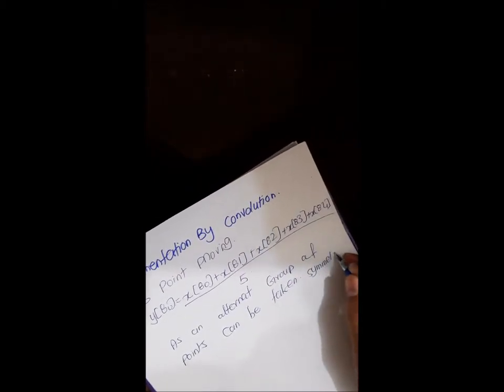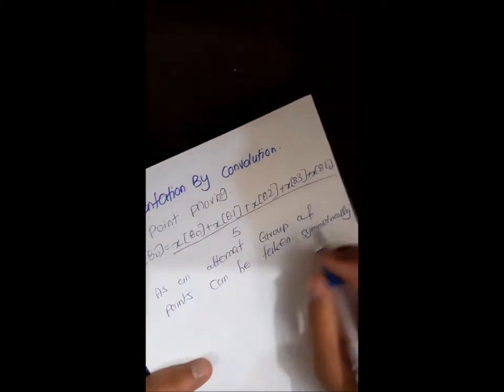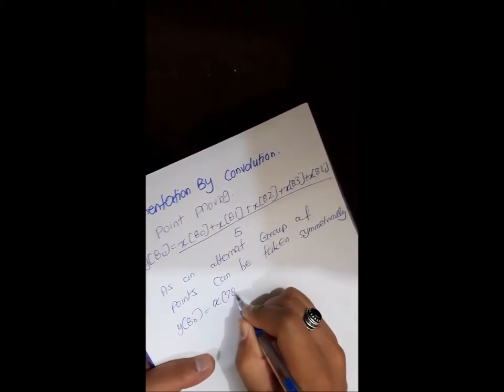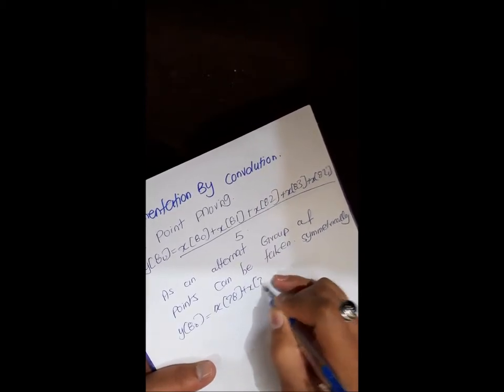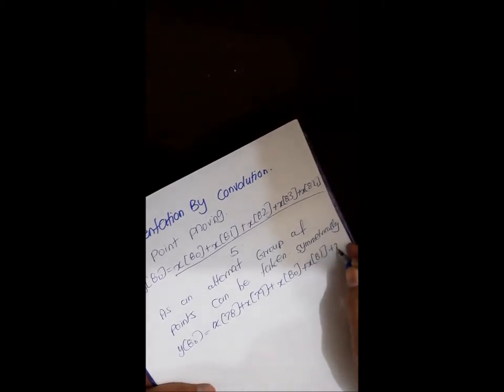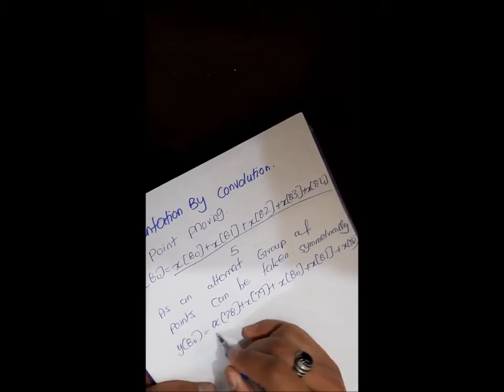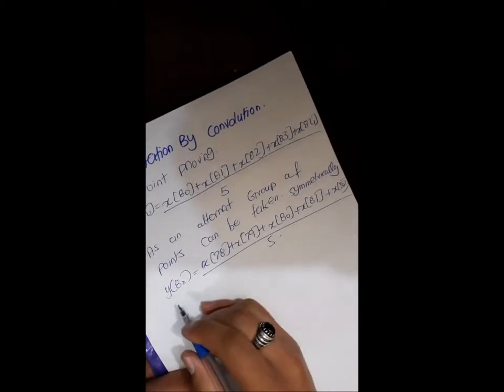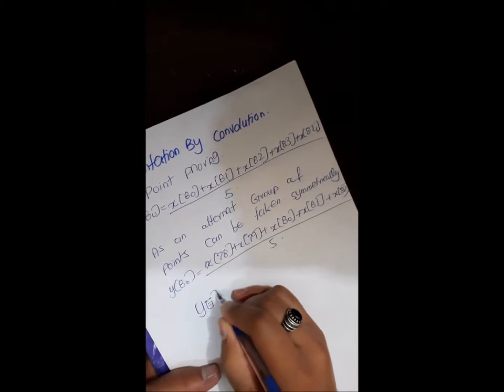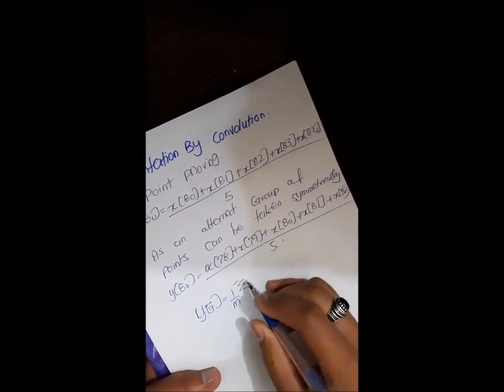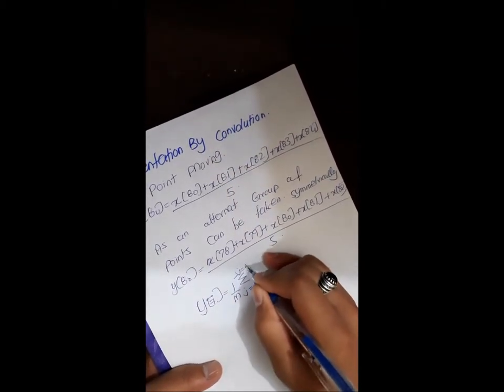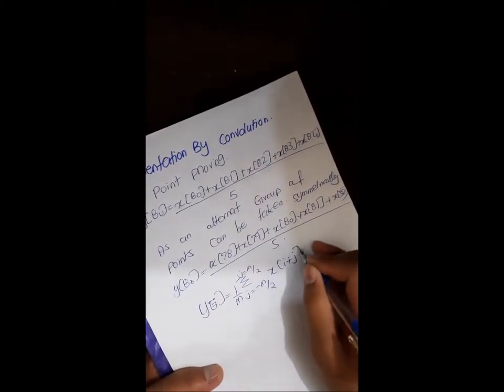Now we have to introduce the recursive implementation in which y of 80 minus x of 78, 79, x of 80 plus x of 81 plus x of 82 and this is again divided by 5. For the alternative method we will have formula y of i equals 1 by m summation j is equals to minus m by 2 up to j is equal to m by 2, x of i plus j.